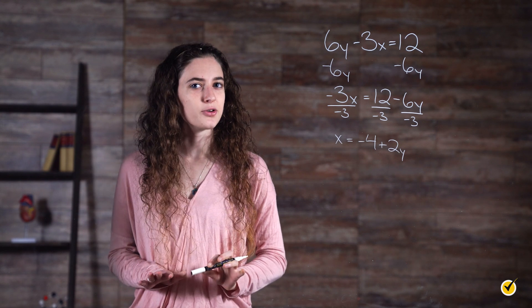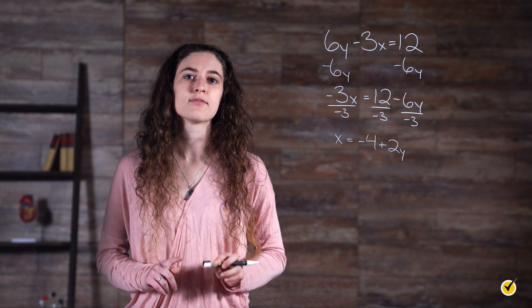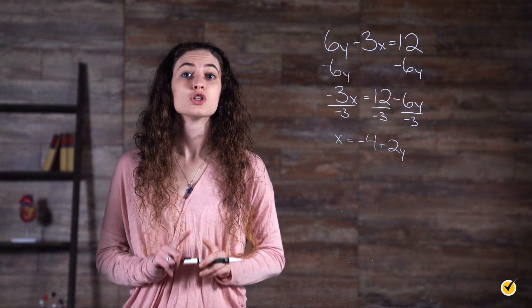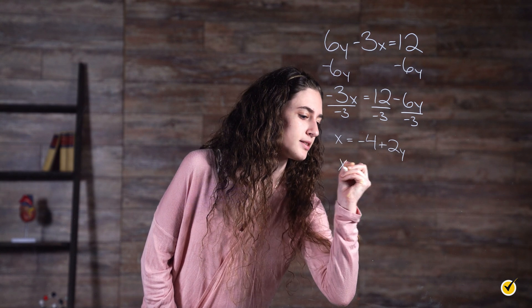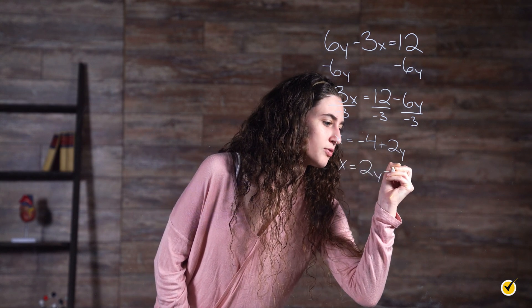This is technically correct, but the best way to write an equation like this is to have the variable before the number. So we are going to rearrange it to look like this: x equals 2y minus 4.